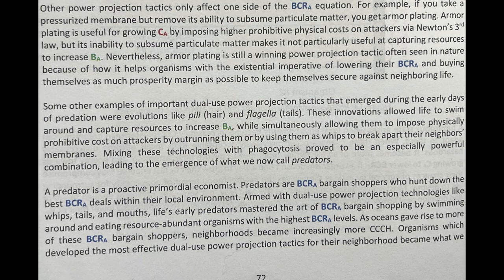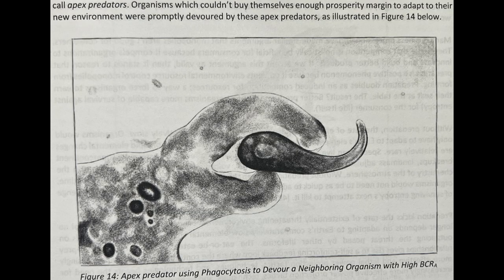Predators are BCRA bargain shoppers who hunt down the best BCRA deals within their local environment. Armed with dual-use power projection technologies like whips, tails, and mouths, life's early predators mastered the art of BCRA bargain shopping by swimming around and eating resource-abundant organisms with the highest BCRA levels. As oceans gave rise to more of these BCRA bargain shoppers, neighborhoods became increasingly more competitive. Organisms which developed the most effective dual-use power projecting tactics for their neighborhood became what we call apex predators. Organisms which couldn't buy themselves enough prosperity margin to adapt to their new environment were promptly devoured by these apex predators.